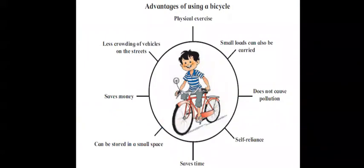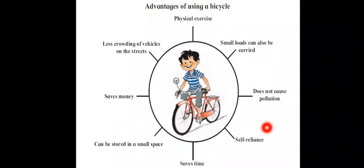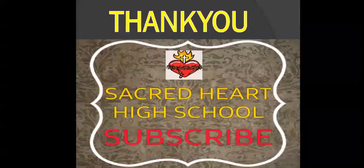Most of the time we can use a cycle. As you can see on the screen, there are many advantages of using a bicycle: physical exercise, you can carry some small loads on it, it causes no pollution, you don't need anyone else to drop you somewhere as you can ride it yourself, it saves time, it can be parked in small places, it saves money as you don't need to refill it with fuel, and there will be less crowd of vehicles on the street. Here we come to an end of Chapter 14, Transport. I hope you all have understood the chapter.